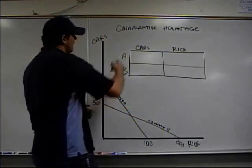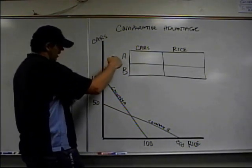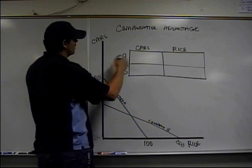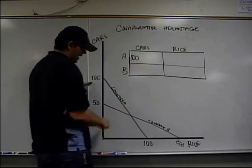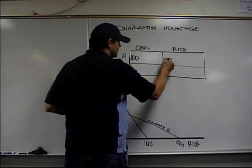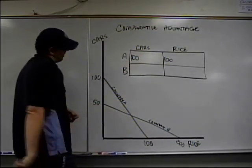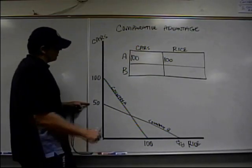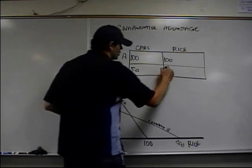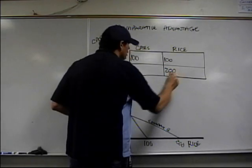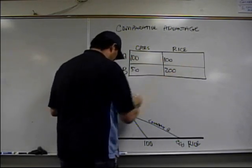First thing I've got to do is fill in this chart. Country A can produce 100 cars and they can produce 100 rice. Country B can produce 50 cars and they can produce 200 rice. I'm leaving this open because I want to write some stuff in there.